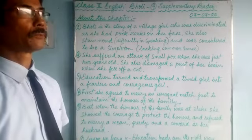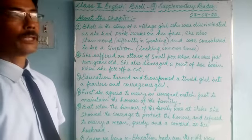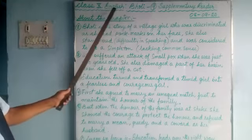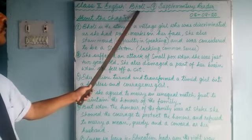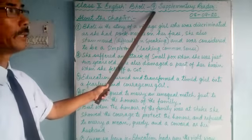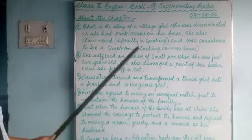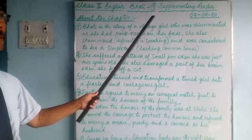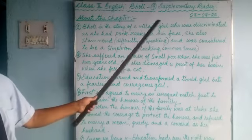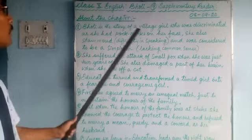Good morning, students of Class 10. Welcome back to the classes. Today we are doing English Lesson 9 from the supplementary reader. The name of the chapter is Bholi. This is the last lesson from the supplementary reader, and then we'll go back to the textbook, where some lessons are still left.